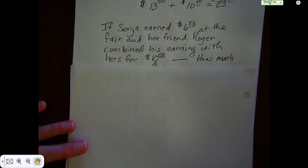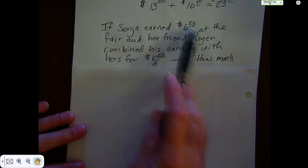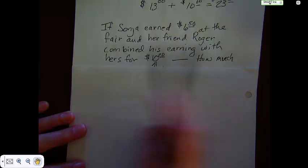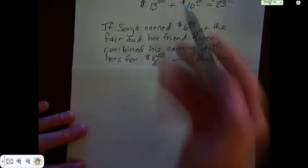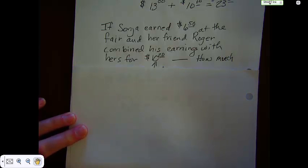Okay, here's one that's a little bit different. It's also a combining problem. If Sonia earned $6.50 at the fair and her friend Roger combined his earnings with hers for a total of $10.20, then how much did Roger earn? Well, we've got a missing amount here, but it could still be a combining problem.